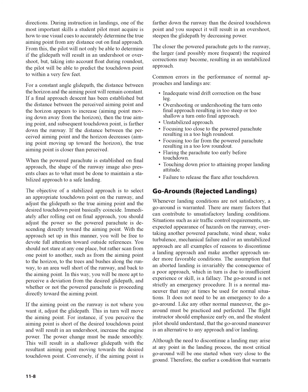For a constant angle glide path, the distance between the horizon and the aiming point will remain constant. If a final approach descent has been established but the distance between the perceived aiming point and the horizon appears to increase — aiming point moving down away from the horizon — then the true aiming point and subsequent touchdown point is farther down the runway. If the distance between the perceived aiming point and the horizon decreases — aiming point moving up toward the horizon — the true aiming point is closer than perceived.